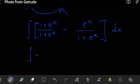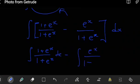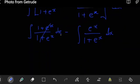At this point we're going to break it into two separate integrals: 1 plus e to the x over 1 plus e to the x dx, minus e to the x over 1 plus e to the x dx. Of course, this is just 1, and then the integral of dx is going to just be x. Minus this side here, we have a little bit of work to do.